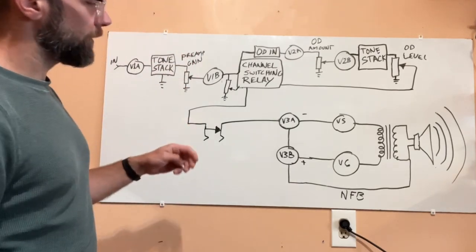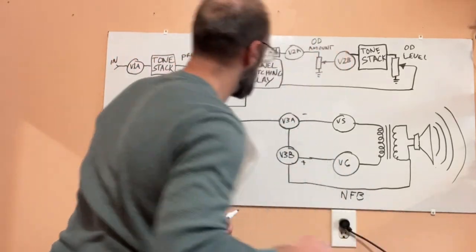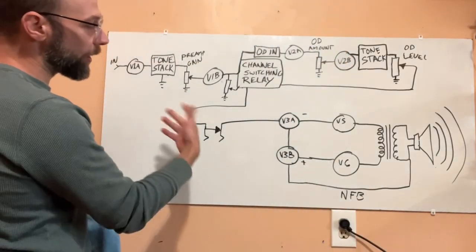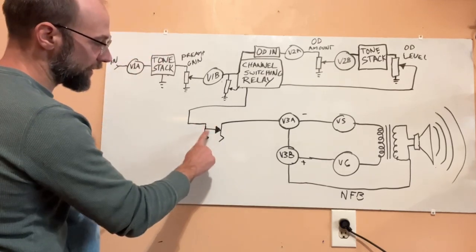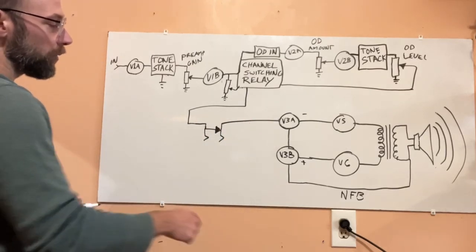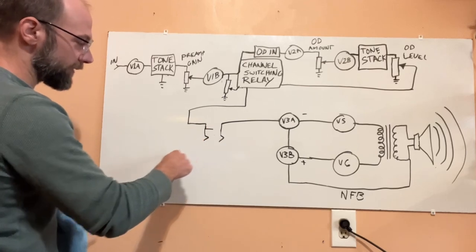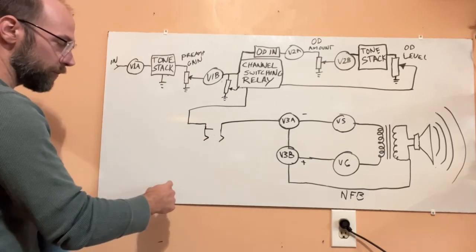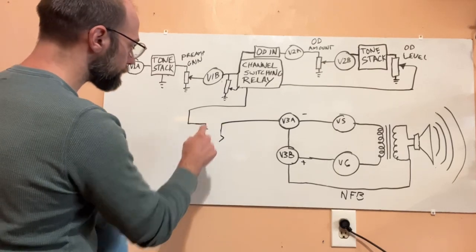And finally, the only other option I haven't really discussed yet is the buffered tube effects loop. So what comes standard is a passive effects loop here. These are just two jacks with a switching jack here for connecting the signal. When you plug something in that breaks this connection and then your effects send goes to the input and then the output of the effects comes back into the return.